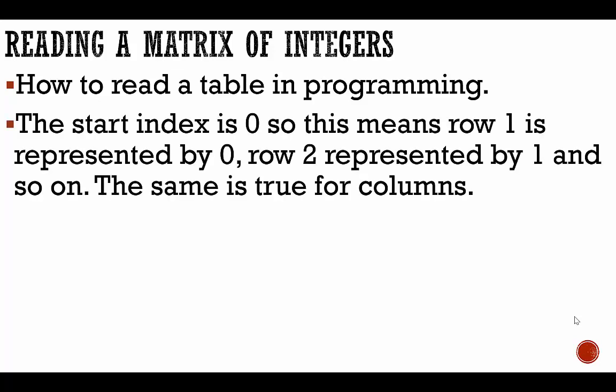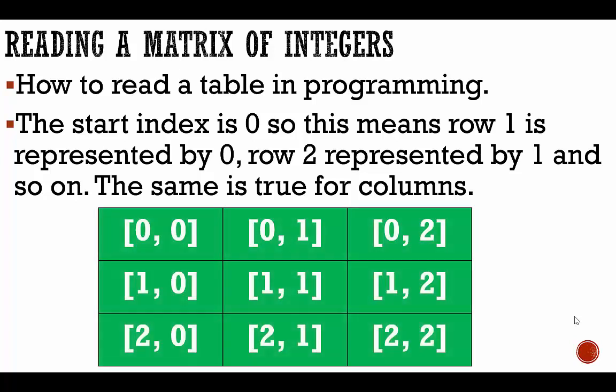The start index is 0, so row 1 is represented by index 0, row 2 is represented by index 1, and so on. The same is true for columns. Here's our matrix. If I'm looking at the first row, I'm looking at row 0, and our rows are indicated by the first number in our set of coordinates. You can think of this as a map, if you will.